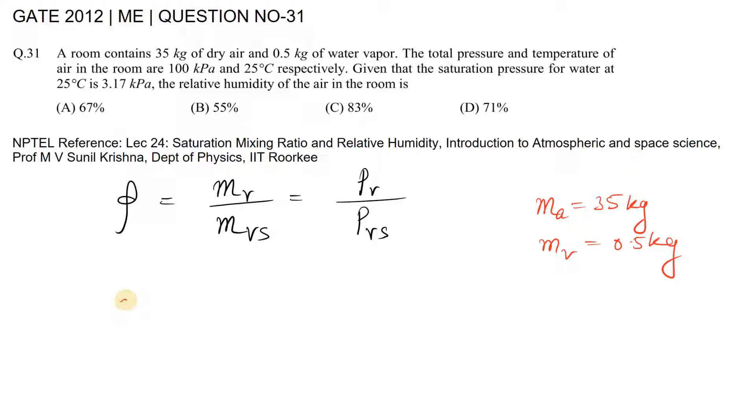Specific humidity, represented by omega, is given by mass of vapor divided by mass of dry air. Using the real gas equation, we can write this as 0.621 times Pv divided by atmospheric pressure minus vapor pressure.